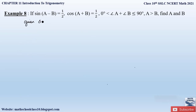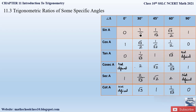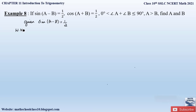First of all, let us write down what is given in the question. They have given us sin(A - B) is equal to half. Let us find out at which angle of sin the value will be half from our previous tables. From the table, at sin 30 degrees we have the value as 1/2. So comparing the two equations, sin(A - B) equals half is nothing but sin 30, therefore A - B equals 30 degrees. Let this be equation number 1.